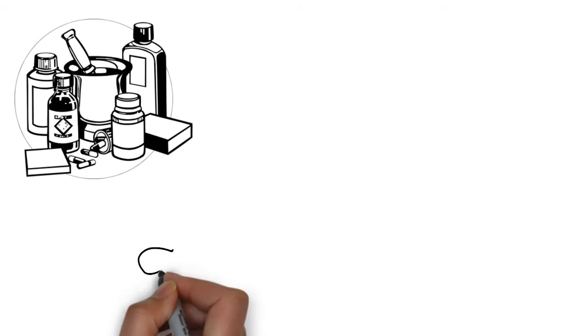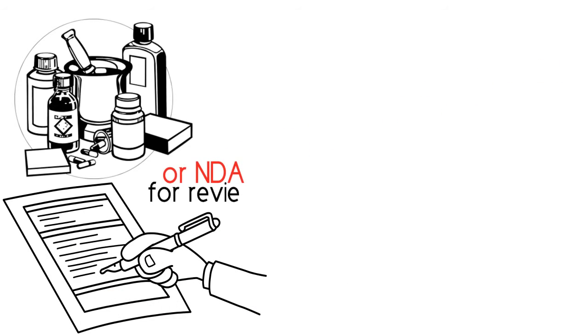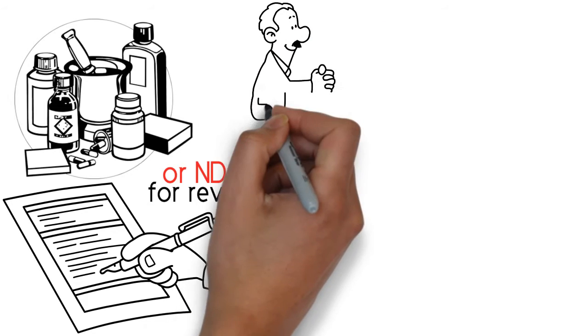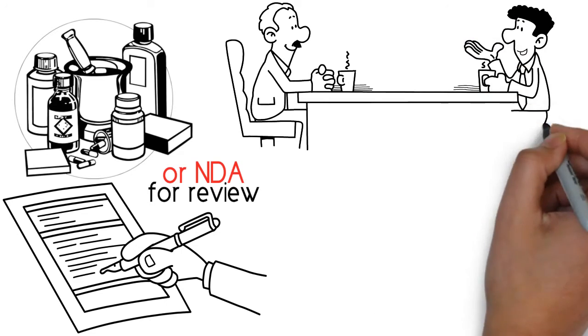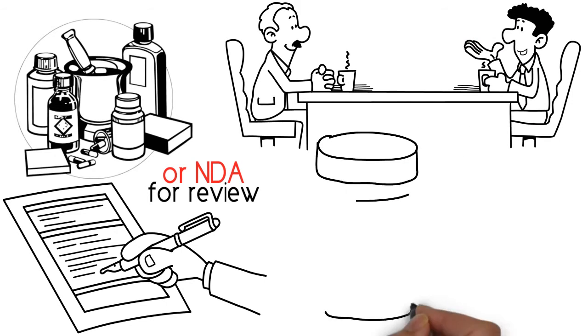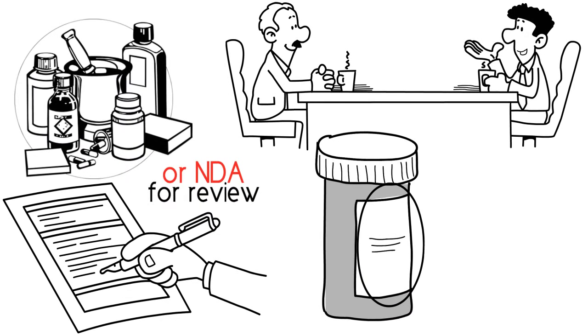Once a drug completes phase 3, the company can submit a new drug application or NDA for review. At this stage, the FDA consults expert advisory committees to determine safety, effectiveness, and labeling. The labeling dictates how the new product should be used once approved, including the type of patient most likely to benefit, the dose range, and potential side effects.